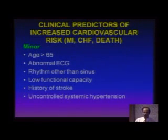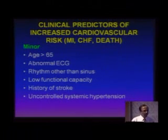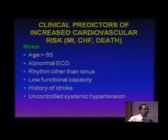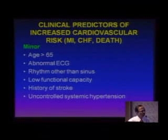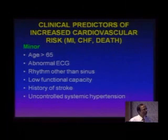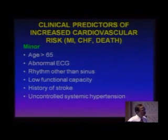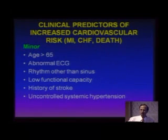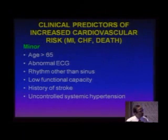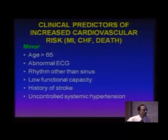Minor predictors are: age more than 65; abnormal resting ECG with ST segment changes; any rhythm other than sinus — if you have AF, nodal rhythm, or intermittent junctional escape rhythm, that is a minor risk criterion; low functional capacity meaning a practically sedentary patient barely ever going out of the house; history of stroke; and uncontrolled hypertension meaning blood pressure more than 160/90 despite medication. The optimal blood pressure for any non-cardiac major or intermediary surgery is a cutoff of 140/90. For minor surgeries you can accept 160/90.